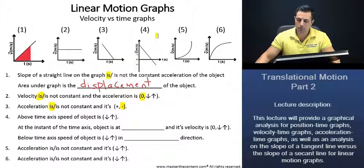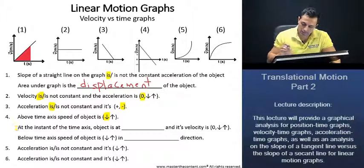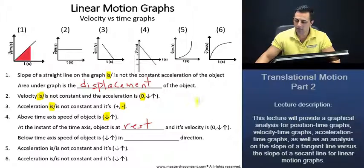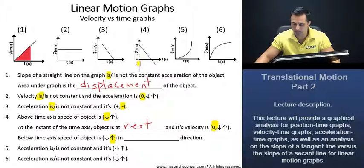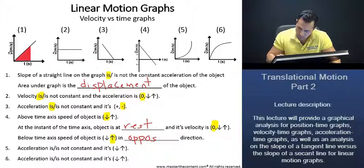For graph four: above the time axis, the speed of the object is decreasing because velocity is approaching zero. At the instant of the time axis, the object is at rest and its velocity is zero. Below the time axis, the speed of the object is increasing because we're moving away from zero — the speed of the object is increasing in the opposite direction.